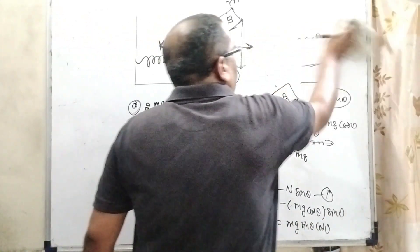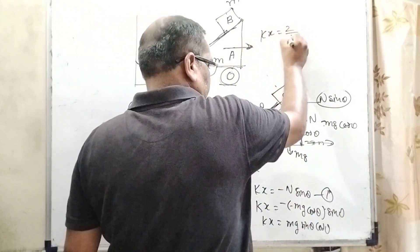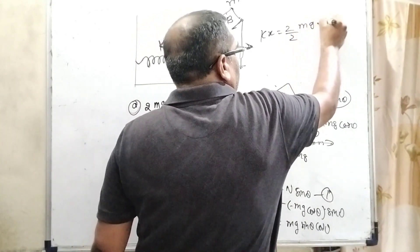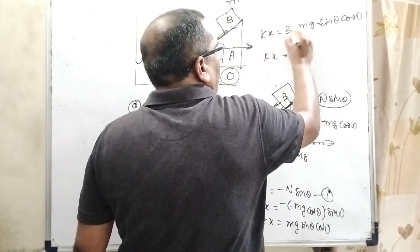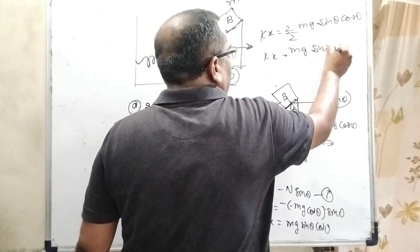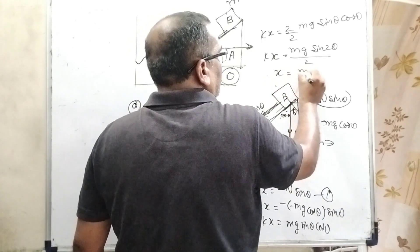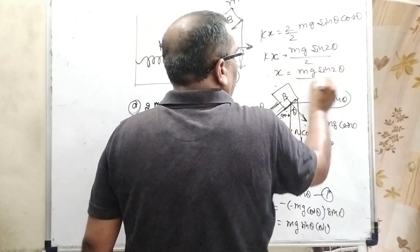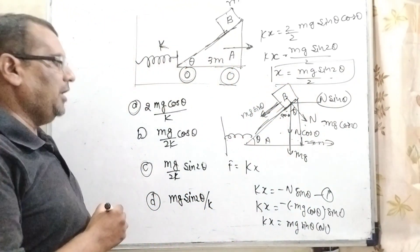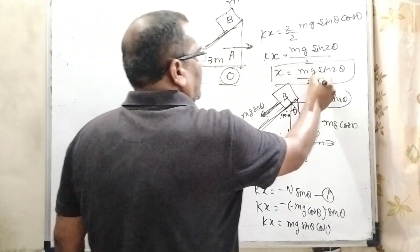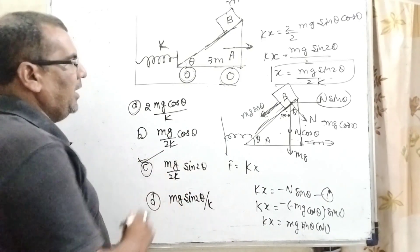Now, multiply by 2 and divide by 2. Then Kx equals 2 Mg sin theta cos theta upon 2. Then here Mg, and 2 sin theta cos theta becomes sin 2 theta upon 2. And we have to calculate X. So therefore, X equals Mg sin 2 theta by 2K. So here, we get the extension X equals Mg sin 2 theta by 2K. So our answer is C, Mg sin 2 theta by 2K is correct.